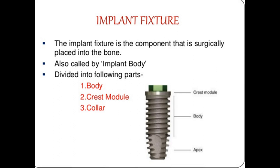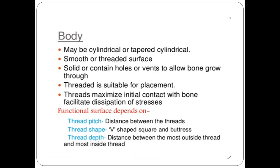The implant fixture is the main part of the implant placed in the bone — also called the implant body — and can be divided into the body, crest module, and collar. The body may be cylindrical or tapered, with a smooth or threaded surface, and may be solid or contain holes or vents to allow bone ingrowth. Threaded designs maximize initial contact with the bone and facilitate stress dissipation. Key thread parameters include thread pitch (the distance between threads), thread shape (V-shape, square, or buttress), and thread depth (distance between the outermost and innermost thread).